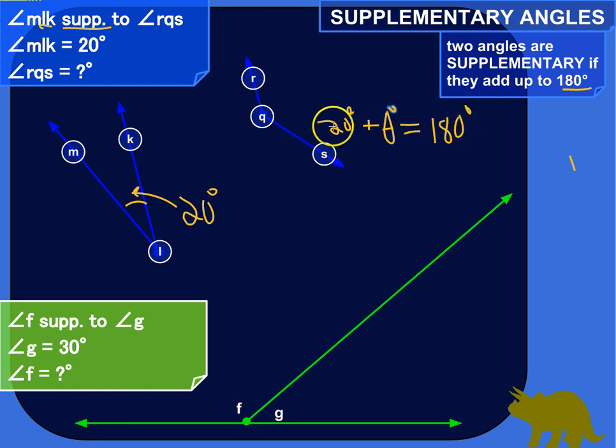So we can solve for that. 20 plus what makes 180? 160. Or we can solve using algebra. We want to get theta by itself. It's added to 20. So we'll subtract 20 degrees to get that theta by itself. We have to do the same thing to both sides of the equation. So 20 minus 20 is 0. So that goes away.